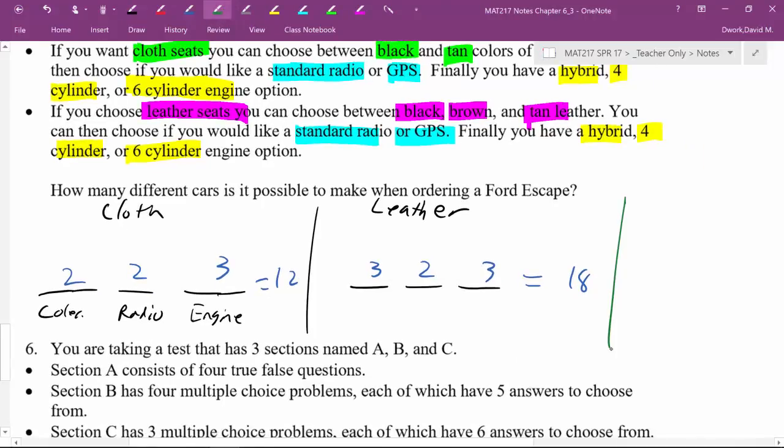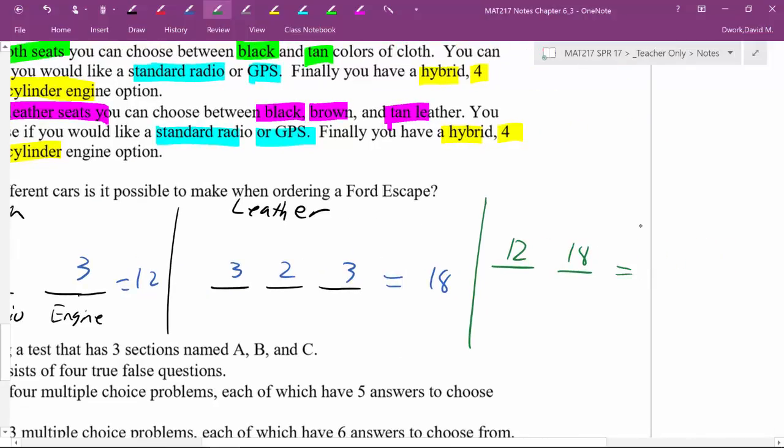But if you really want to apply the addition or multiplication principle, you just say to yourself, is this a decision with the number of choices and a decision with the number of choices? And then those are going to go together to make one final product. So do I choose my cloth, then my leather, and put them into one car? No! So that's not multiplication principle. That is not decisions and choices. I have one decision to make. What is my decision? What car do I want to buy? How many choices do I have? 12 of that kind, 18 of this kind. So that would be adding. So there are a total of 30 different options.